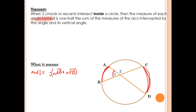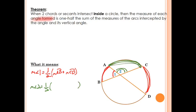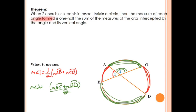Instead of writing one-half, you could also write it as divided by two, because dividing by two is the same thing as multiplying by one-half. The same thing would be true for angle two. If I were trying to find the measure of angle two, that would be one-half the sum of arc AC and arc BD — the arc intercepted by its vertical angle. The measure of AC plus the measure of BD, divided by two.